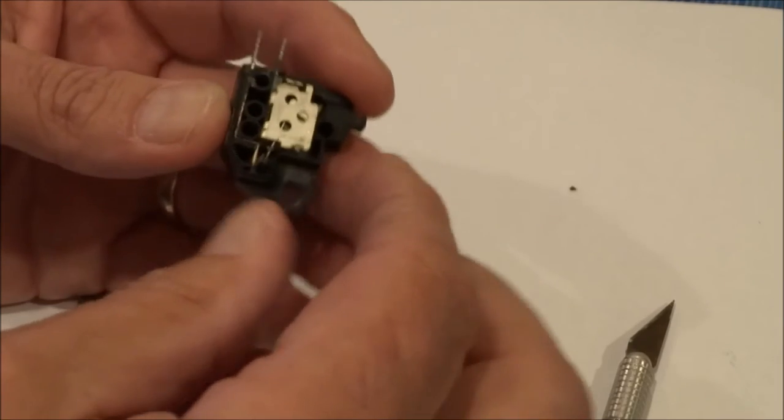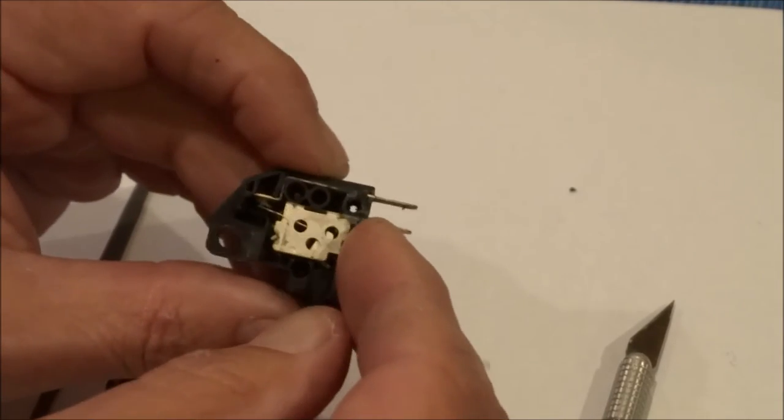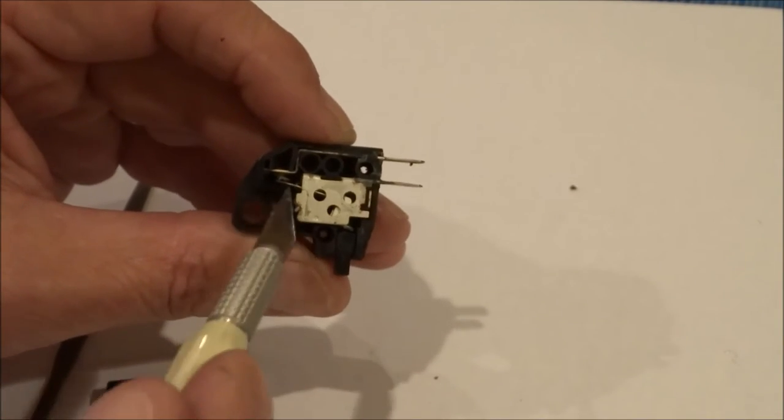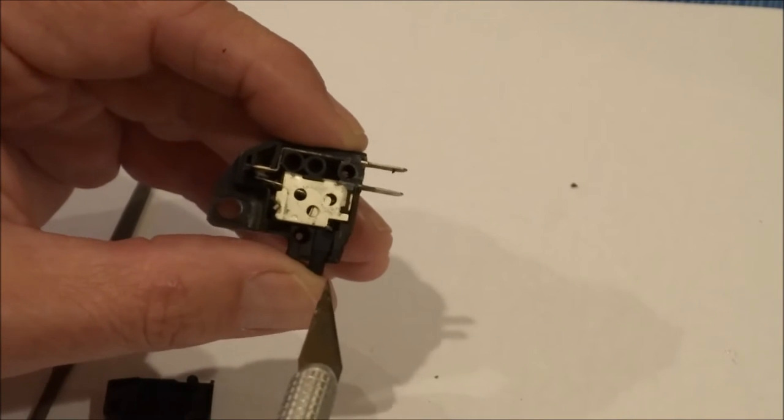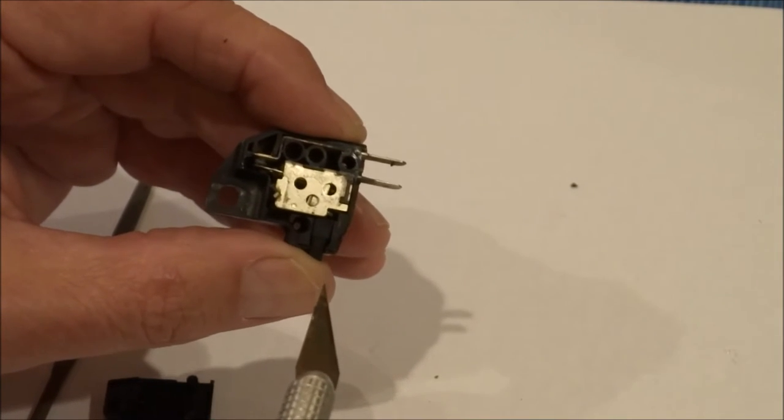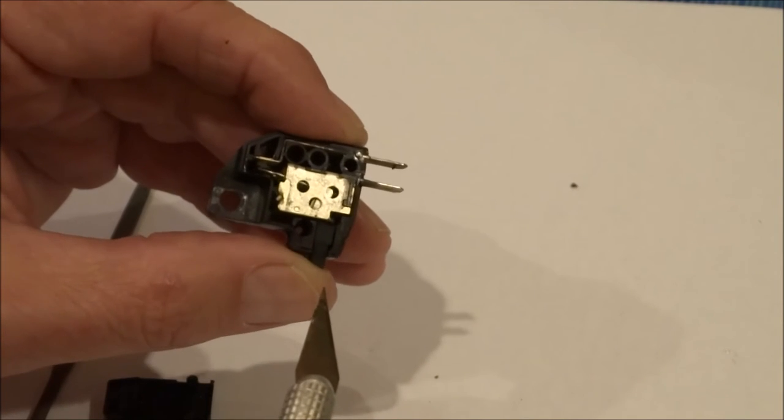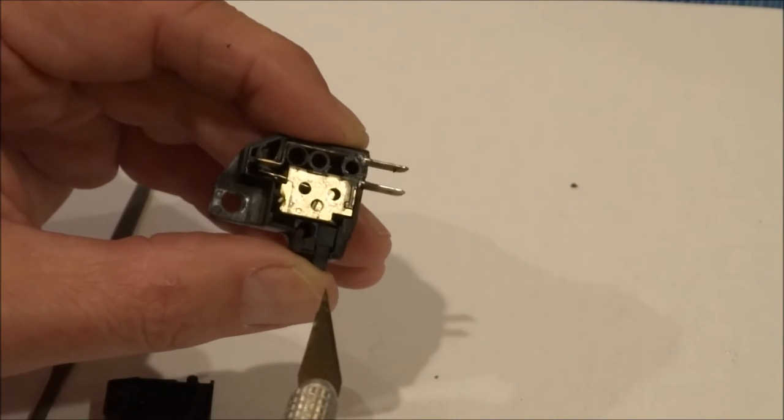Now if you look at the way this switch works you'll see this bottom contact move back and forth as I actuate the switch, and that wiping action is supposed to keep the contacts clean and make sure they don't corrode.